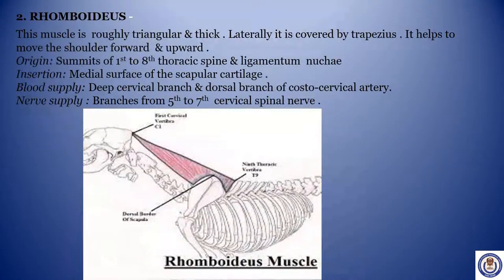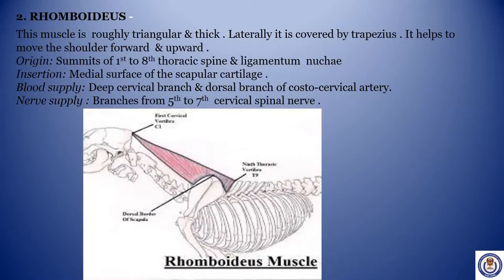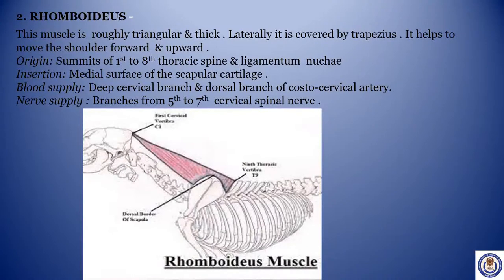Second: Rhomboideus. This muscle is roughly triangular and thick. Laterally, it is covered by trapezius. It helps to move the shoulder upward and forward. Origin: summits of first to eighth thoracic spine and ligamentum nuchae. Insertion: medial surface of the scapular cartilage. Blood supply: deep cervical branch and dorsal branch of costo-cervical artery. Nerve supply: branches from fifth to seventh cervical spinal nerve.